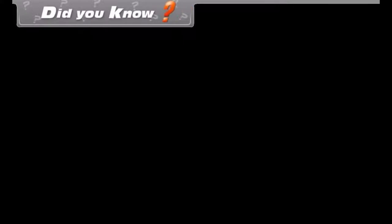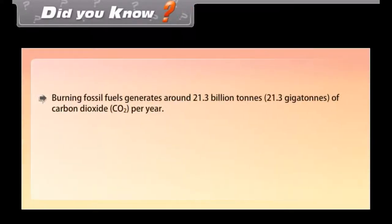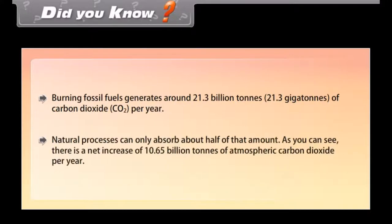Did you know? Burning fossil fuels generates around 21.3 billion tons of carbon dioxide (CO2) per year. Natural processes can only absorb about half of that amount. As you can see, there is a net increase of 10.65 billion tons of atmospheric carbon dioxide per year.